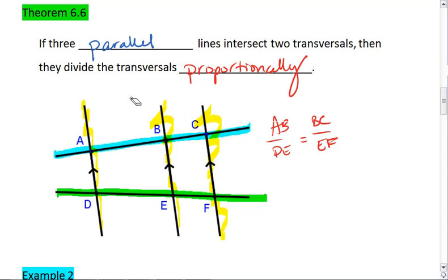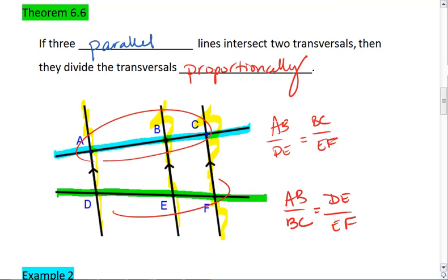Or you can say that AB to BC, the parts of the blue line, equals DE to EF, the parts of the green line.